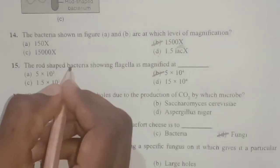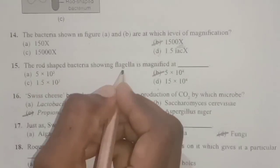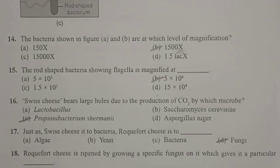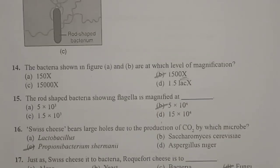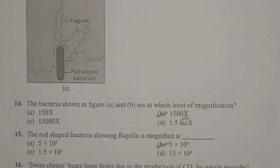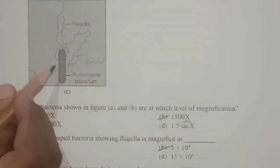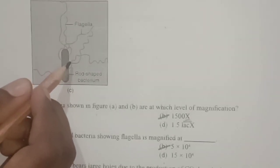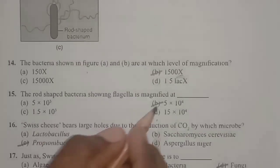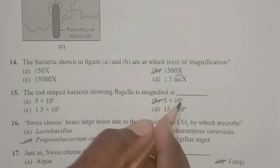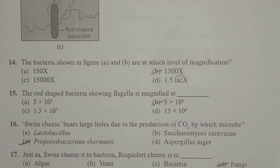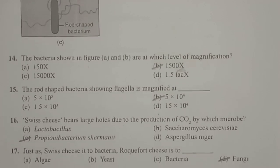Next: the rod-shaped bacteria showing flagella in diagram C is magnified at 5 × 10⁴. The image in diagram C is a rod-shaped bacterium having several flagella, and its magnification power is about 5 × 10⁴.